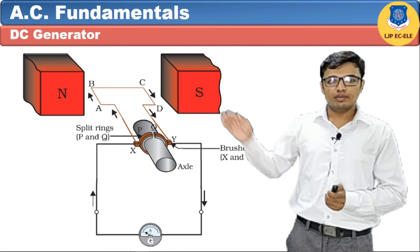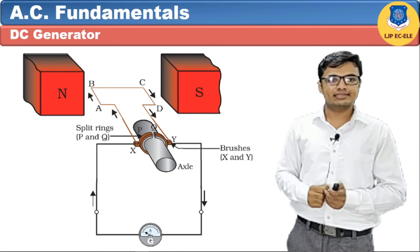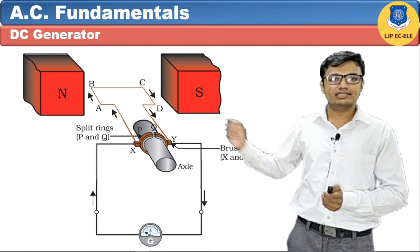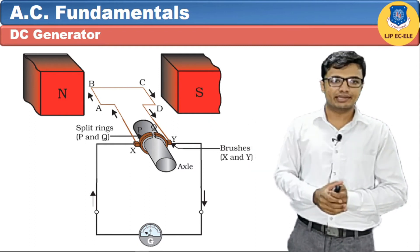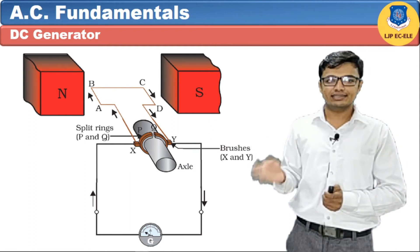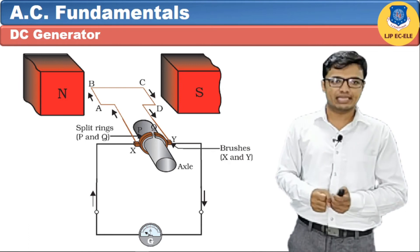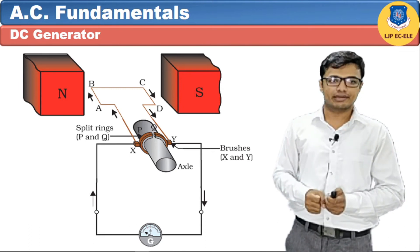If we rotate the conducting loop by 180 degrees, the commutator also rotates 180 degrees and reverses its position. This means the direction of current in the galvanometer still remains the same, which is why we call this a DC generator.